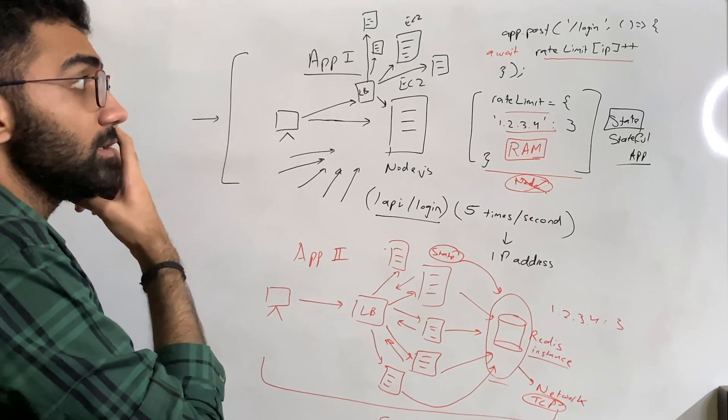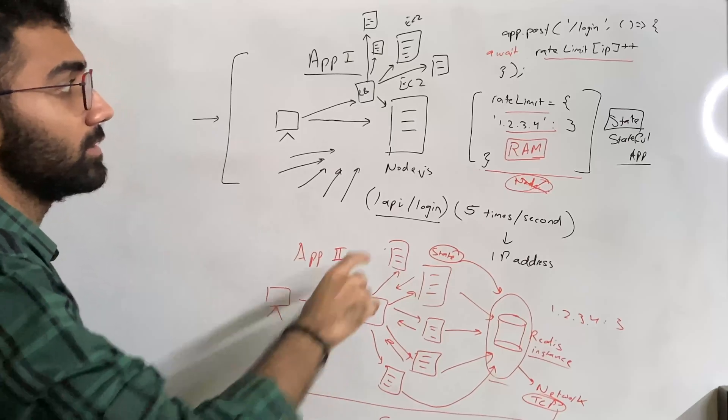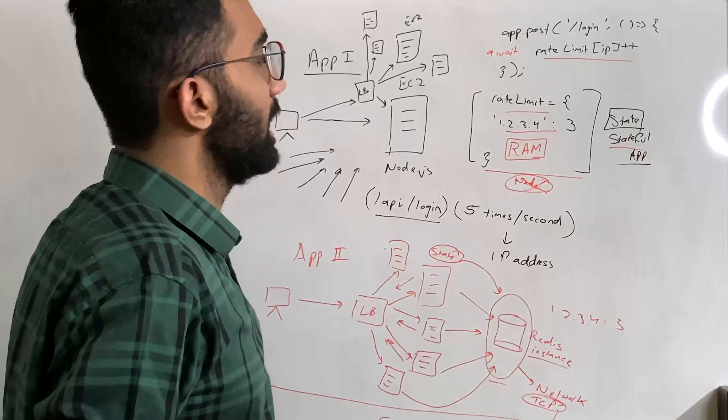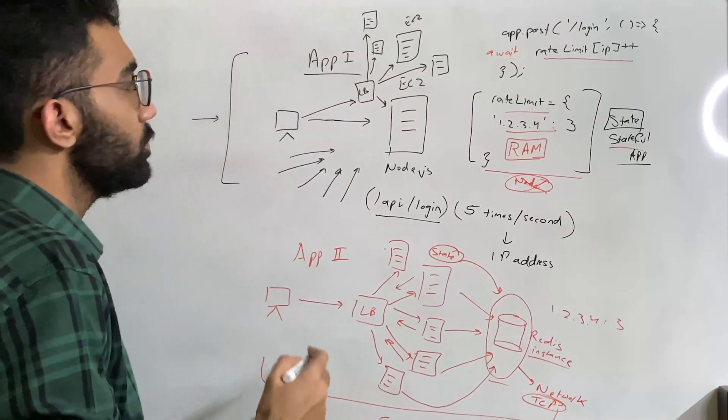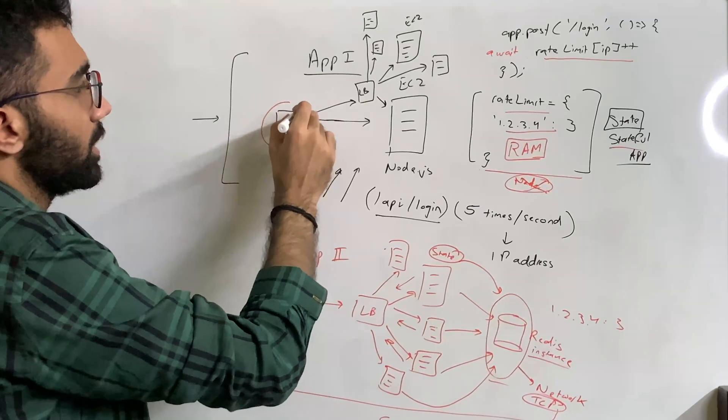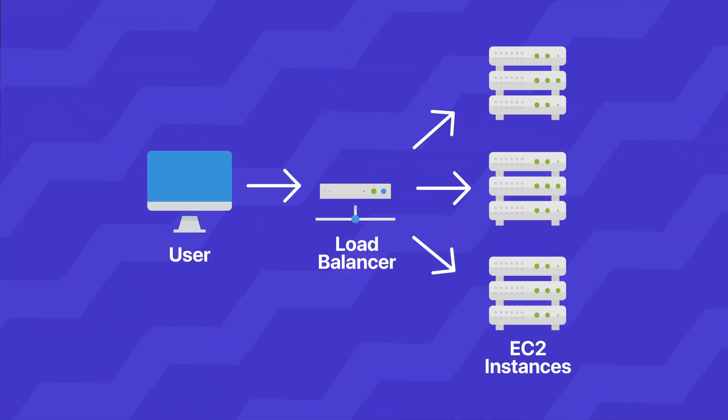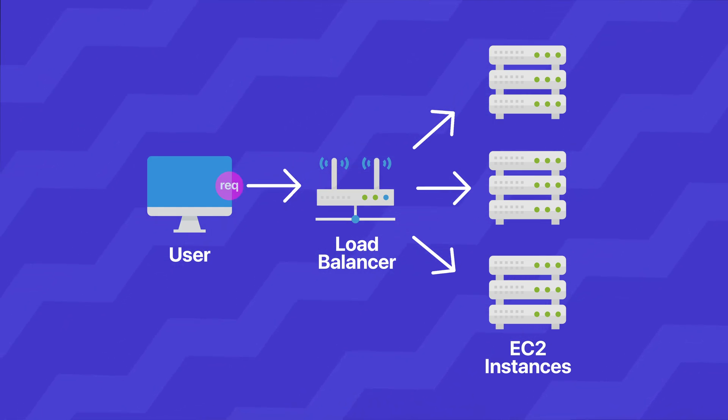There are ways where you can kind of scale this architecture horizontally as well, stateful architecture. But for that, what you need to do is you need to somehow route individual client's request always to the same server. And the way to do that is that maybe the first time this load balancer gets a new request, it sends it to a server. The server over here actually sends a special cookie.